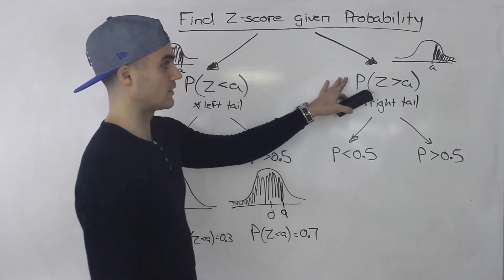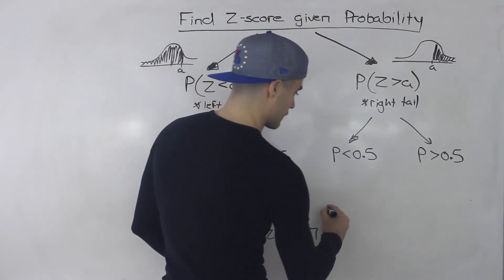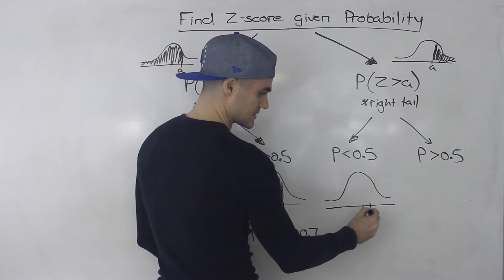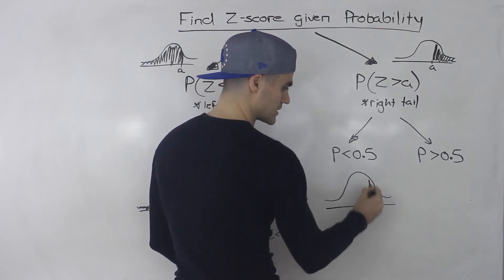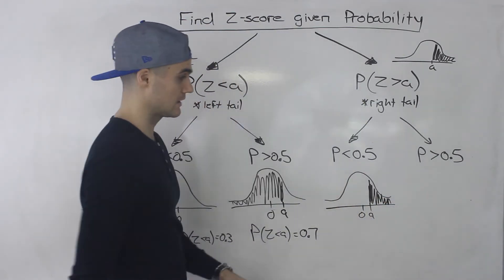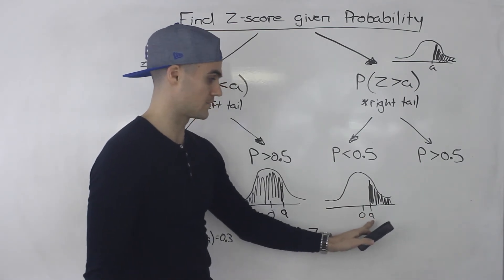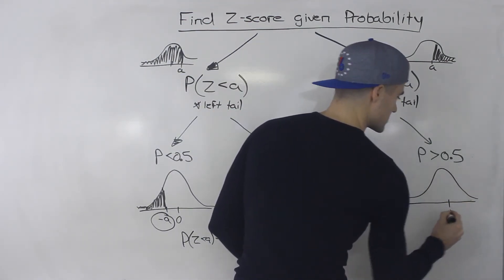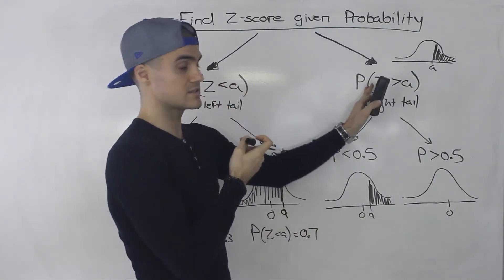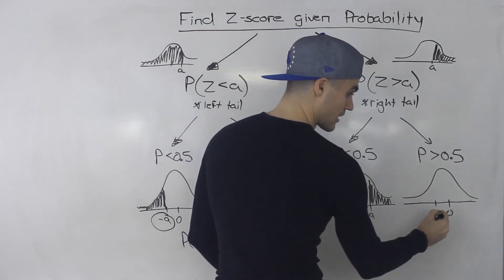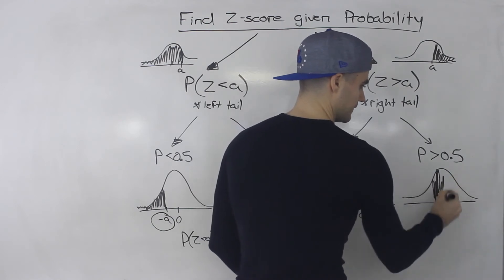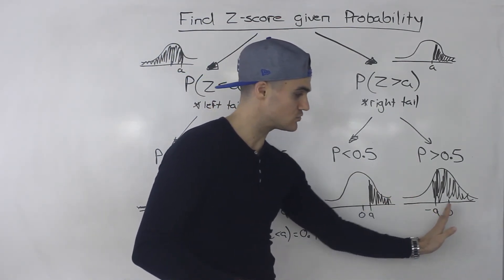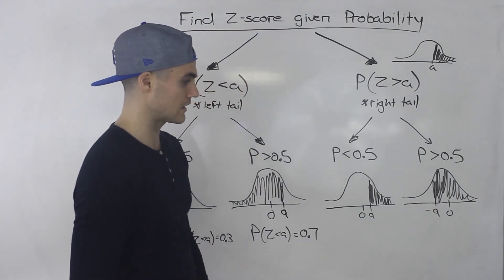Now for the right-tail scenario: if we're given a probability to the right of A and that probability is less than 0.5, then A is going to be positive — to the right of 0. But if we're given a probability to the right of A and it's greater than 0.5, then A is going to be negative, because A must be to the left of 0 for that right-side area to exceed 0.5.